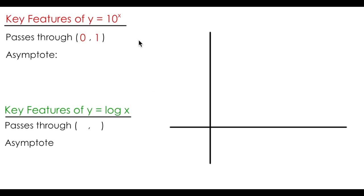One of the properties of inverse functions is that the x's and the y's are switched. The domain for the original function becomes the range for the inverse, and the range for the original function becomes the domain of the inverse. So we can say that the logarithmic function passes through 1, 0, where the original function passed through 0, 1.